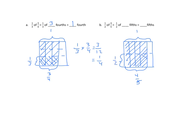We'll label it one-half and shade in one-half of the four-fifths. We have one-half times four-fifths, and we have four parts shaded in both directions — that's four out of ten. We can simplify because both four and ten are divisible by two, so that becomes two-fifths. One-half of four-fifths equals two-fifths.